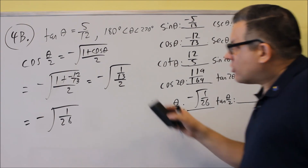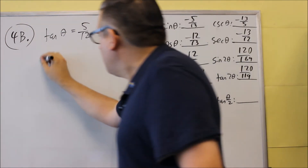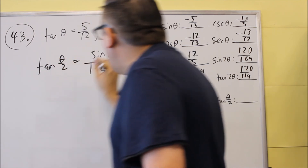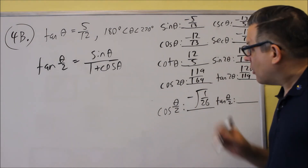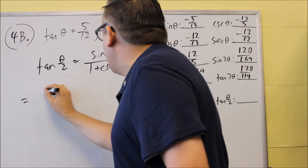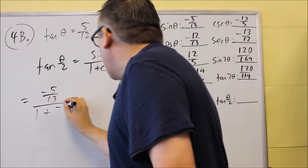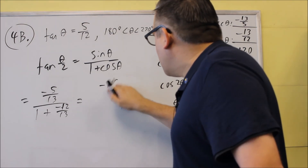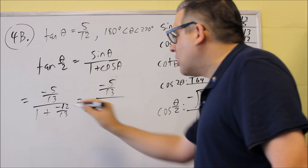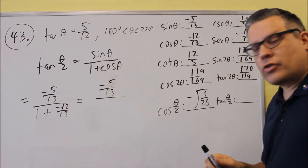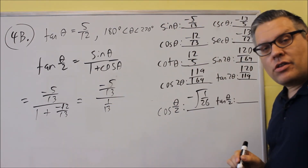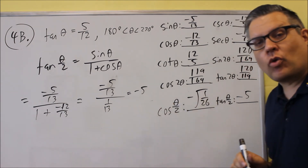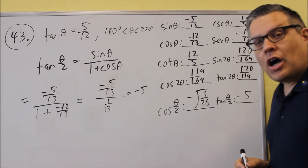The last one is tangent θ/2. Using the formula with sine over (1 + cosine): we get (negative 5 thirteenths) over (1 + negative 12 thirteenths). On top we have negative 5 thirteenths. On the bottom, 13/13 − 12/13 = 1 thirteenth. Flipping and multiplying, the thirteenths cancel out and you get negative 5 over 1. So the answer is negative 5. Remember that exact values means you need to put in fractions for your answer.